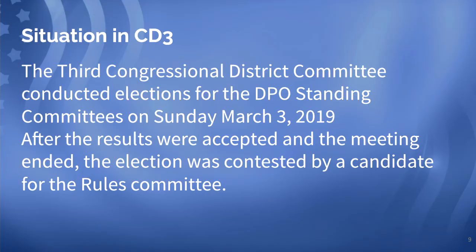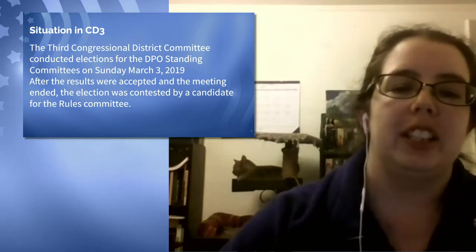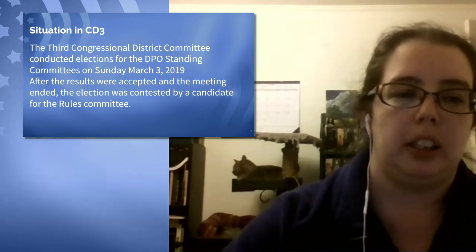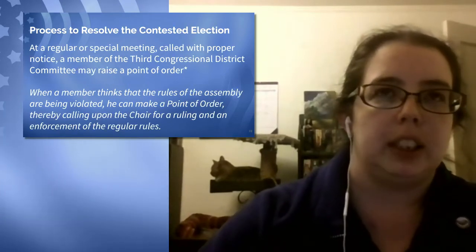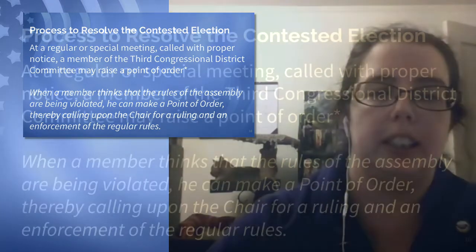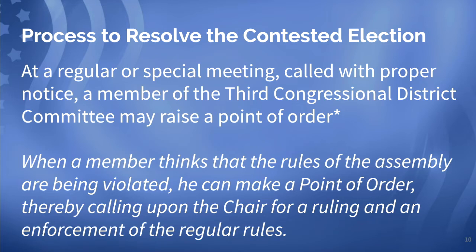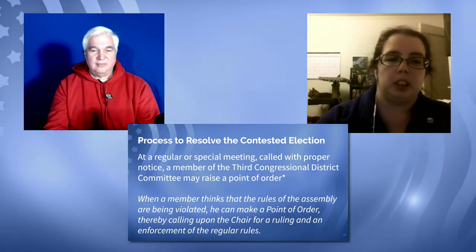Moving along to the next slide: last Sunday, March the 3rd, the 3rd Congressional District Committee conducted elections for the DPO standing committee. The results were accepted and the meeting ended only seven minutes late. The election was contested by a candidate for the rules committee, and my understanding is that this happened the following day — which is not the normal accepted practice for that. The process to resolve a contested election, ideally at the time during a regular or special meeting called with proper notice, is for a member of the 3rd Congressional District to raise a point of order.